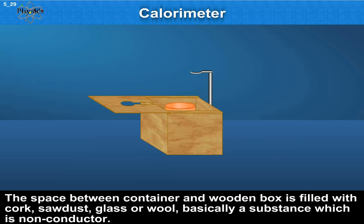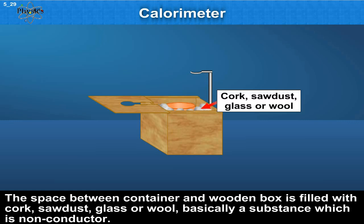The space between the container and the wooden box is filled with cork, sawdust, glass or wool. That is basically a substance which is a non-conductor.